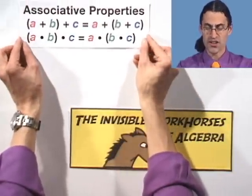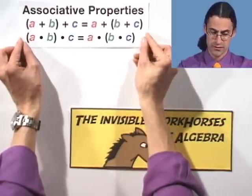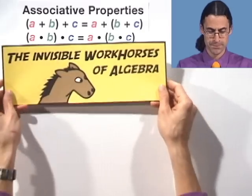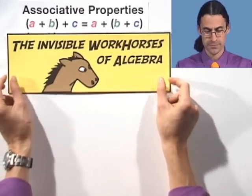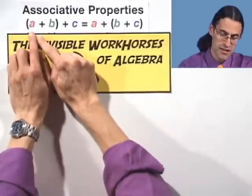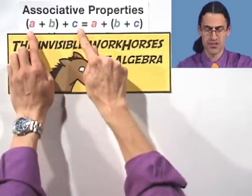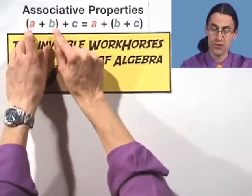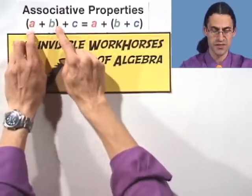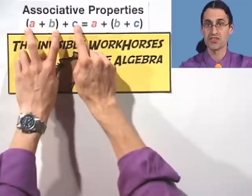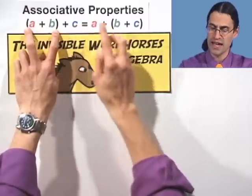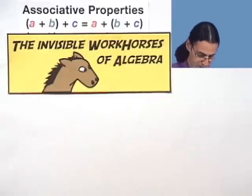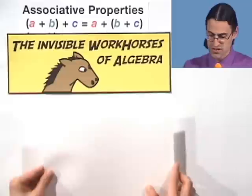Now, this property is called the associative property. What it basically means is, if you want to add three numbers together, you can either group them this way. Remember, the order of operations is to first do the parentheses. So you can first either add those two numbers together and then add the last one, or you could add the last two numbers and then add the first one. Either way will produce the same answer. We say that addition is associative.